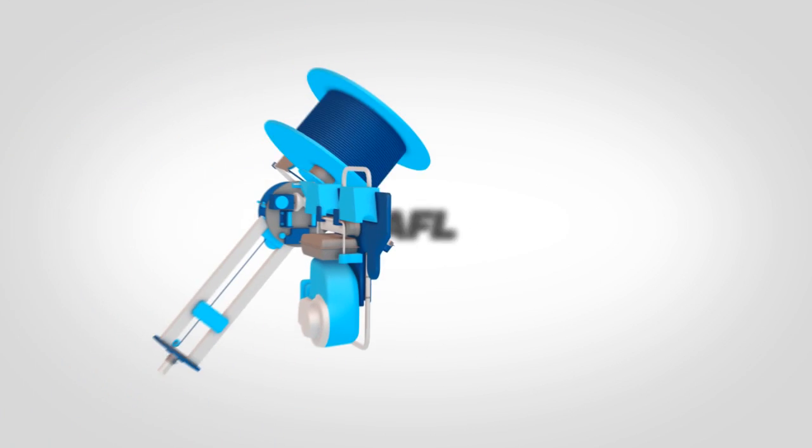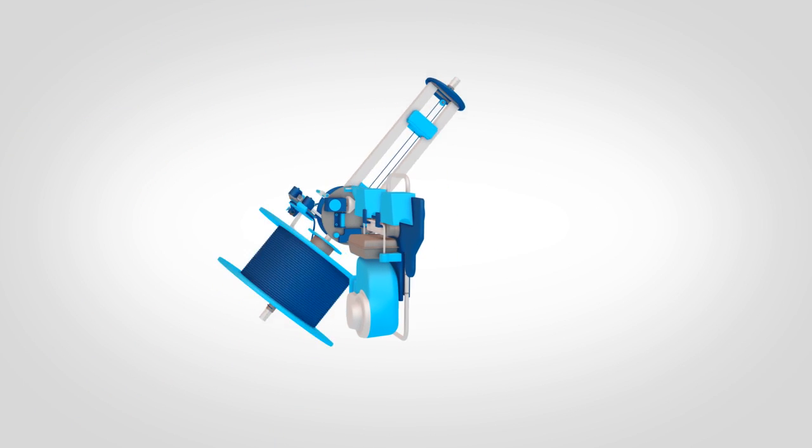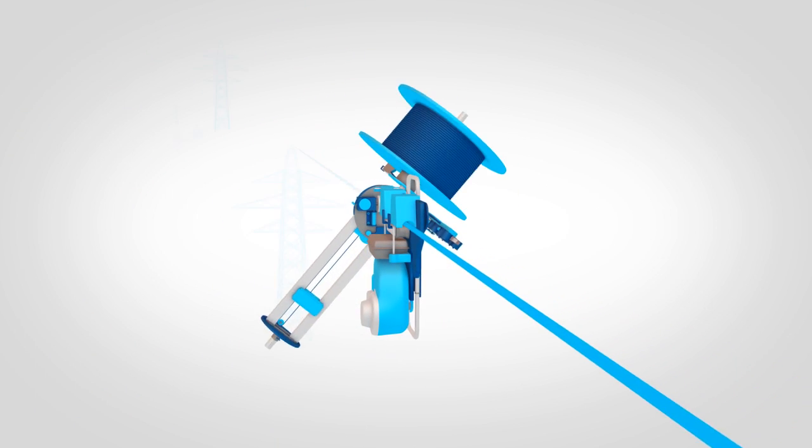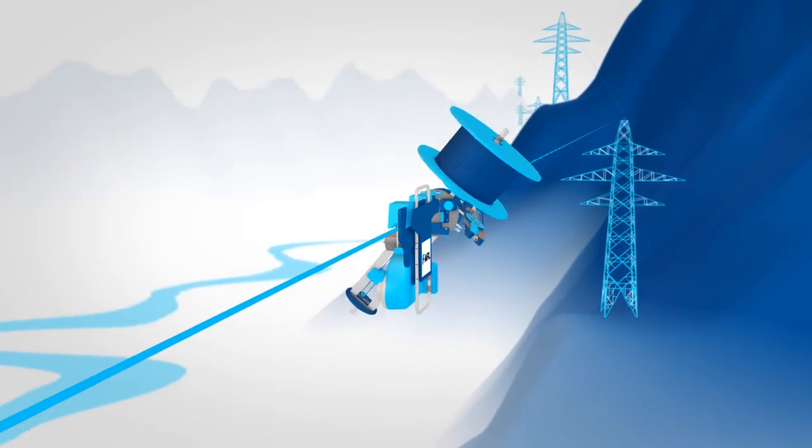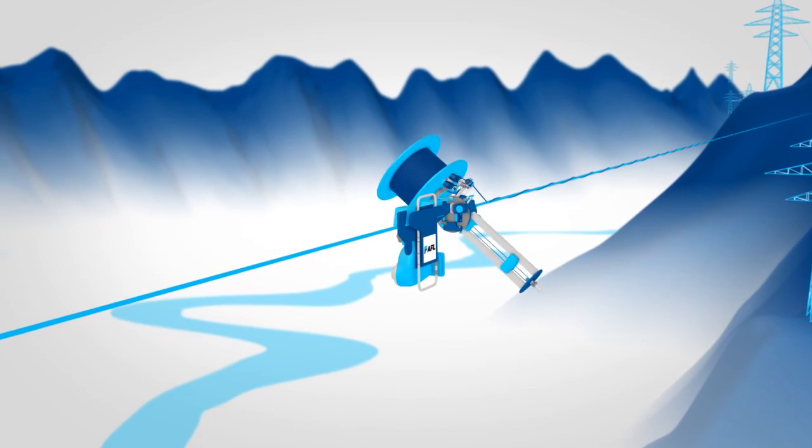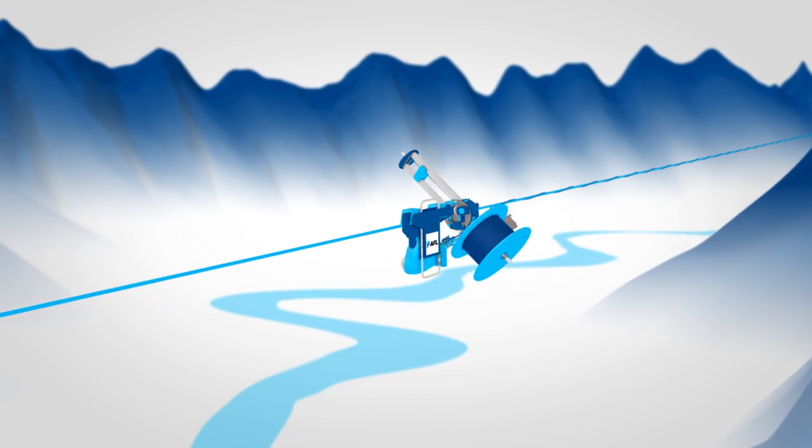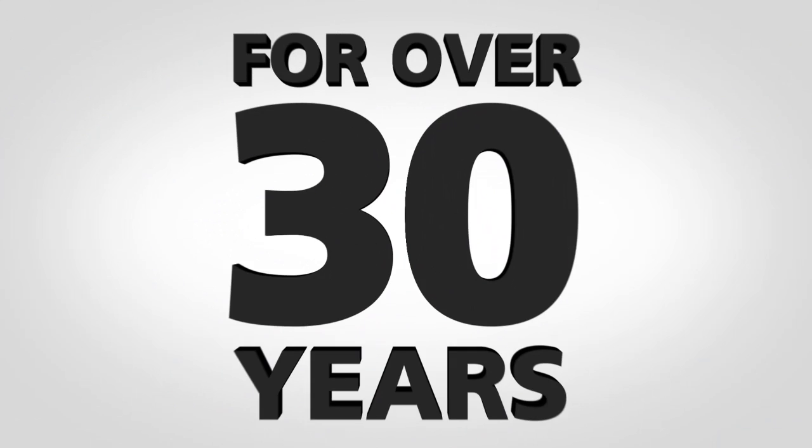Skywrap from AFL is the leading attached fiber optic cable system for aerial power lines. This proven solution has been deployed successfully in over 40 countries in remote and difficult to reach locations around the world for over 30 years.